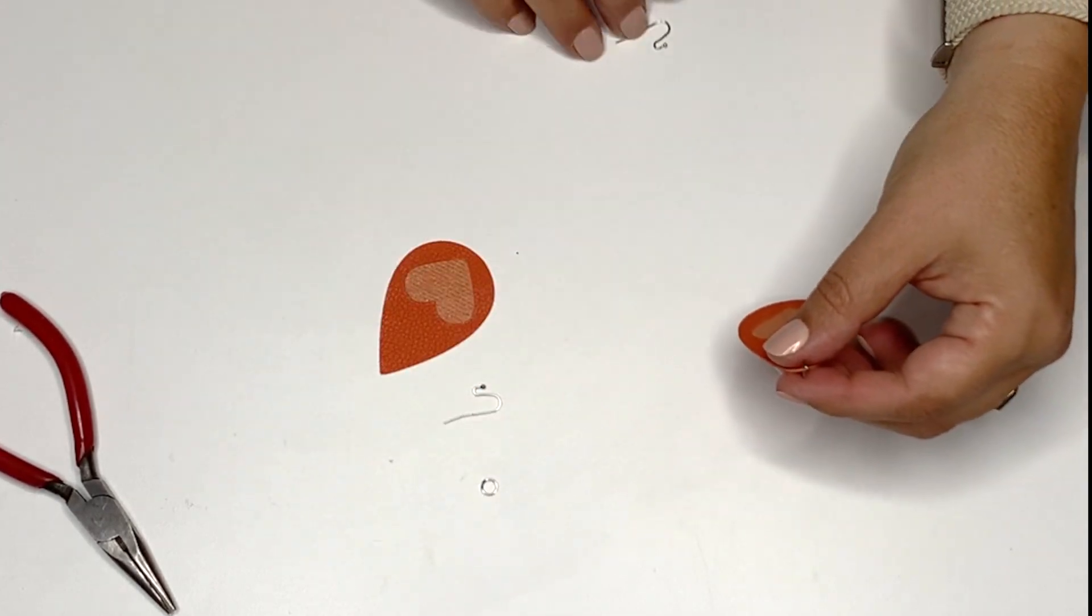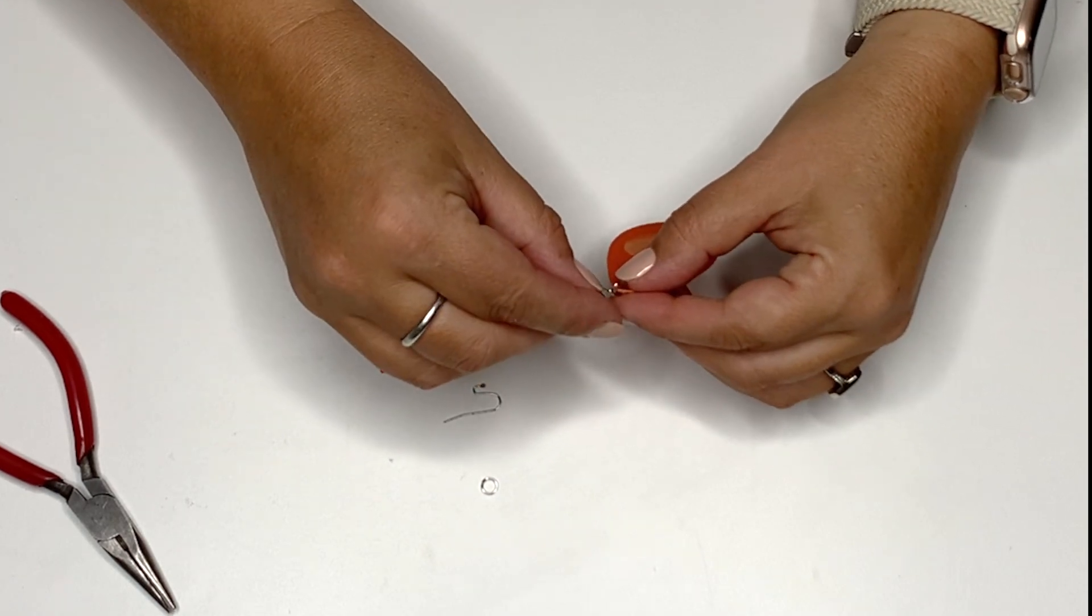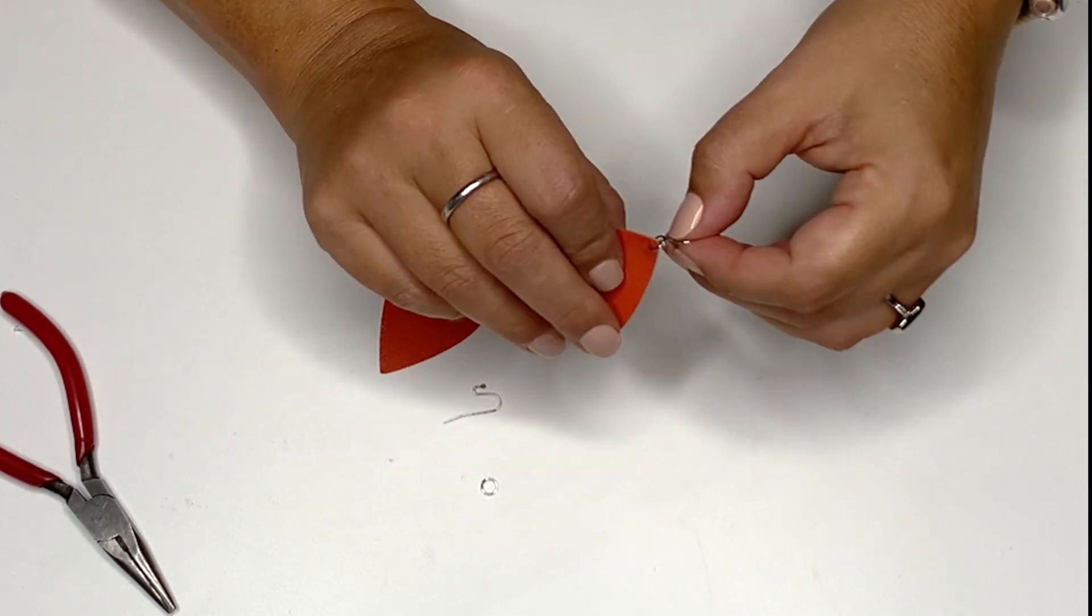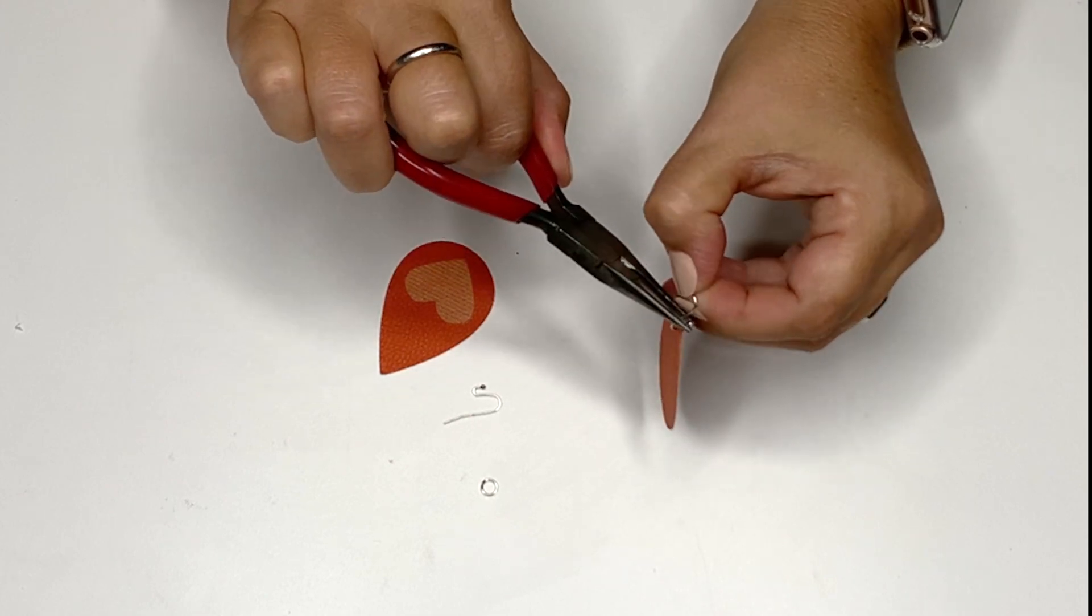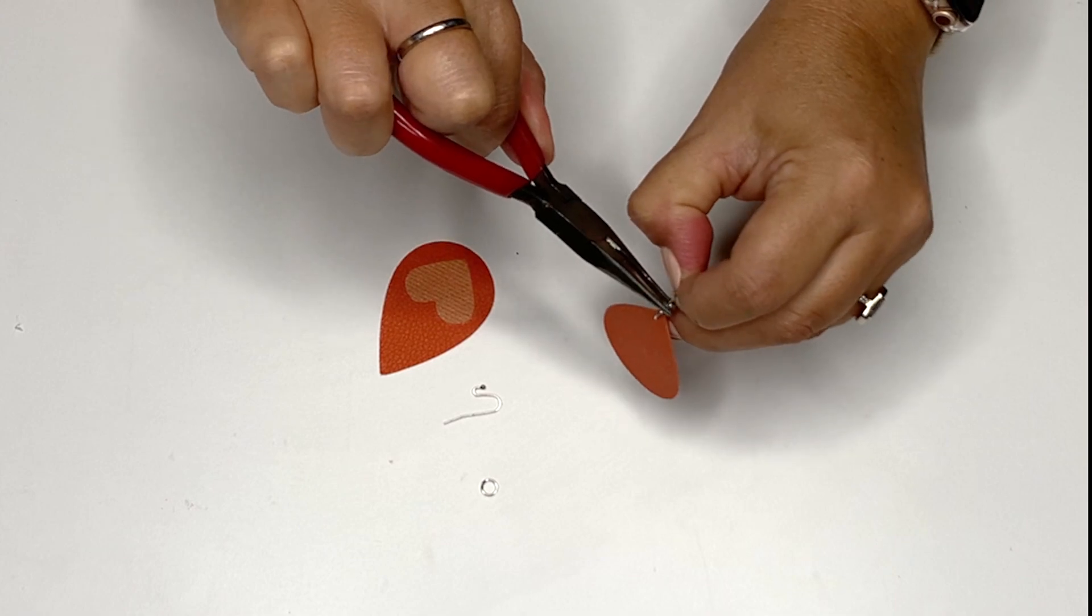Next up I'm going to just hook this jump ring onto my earring back and I'm going to use my needle nose pliers to press the ball right under the ball right to the earring back and that locks it in place.